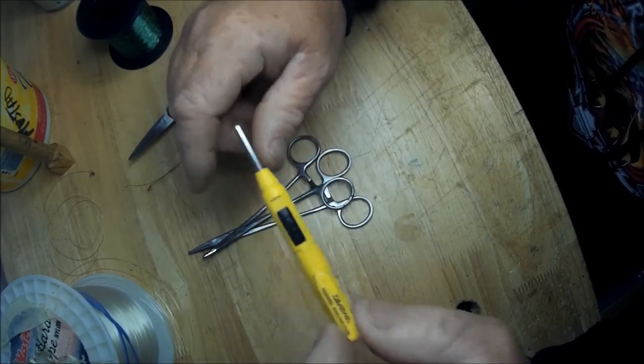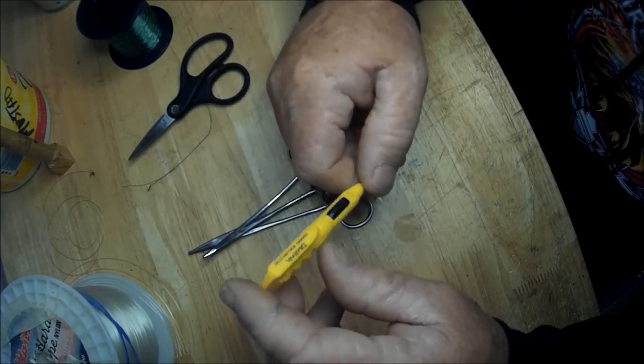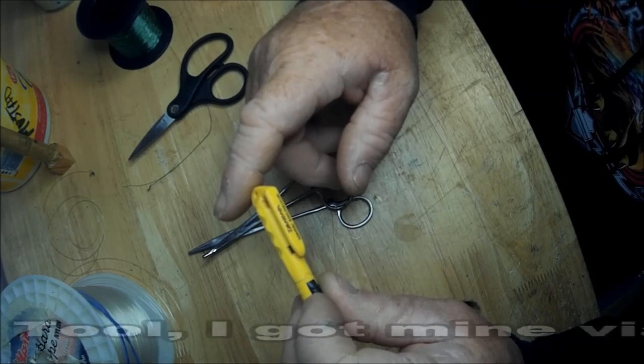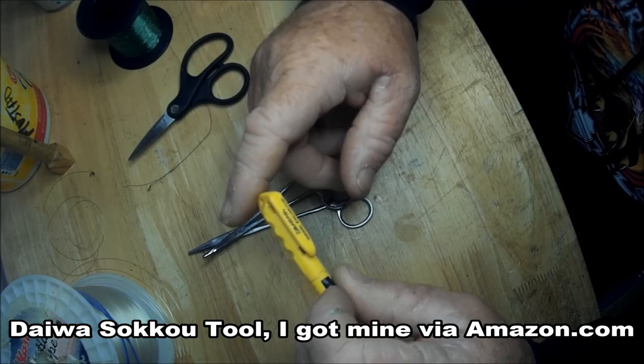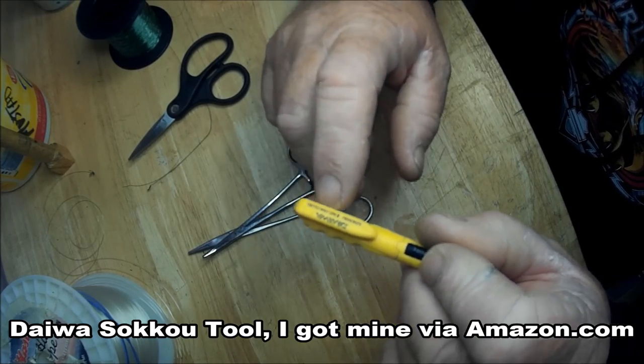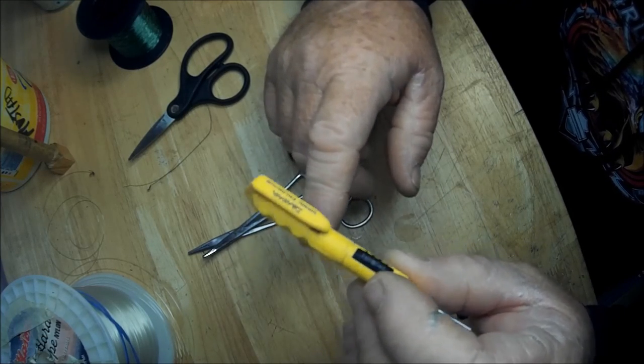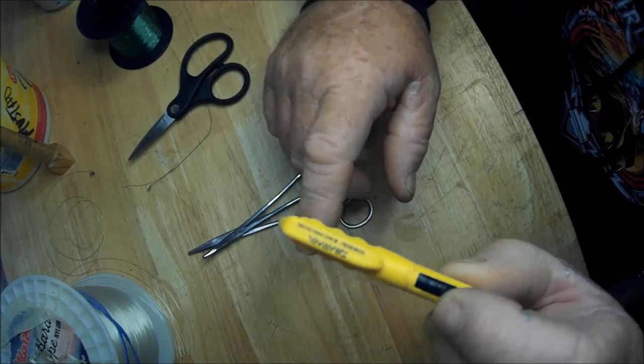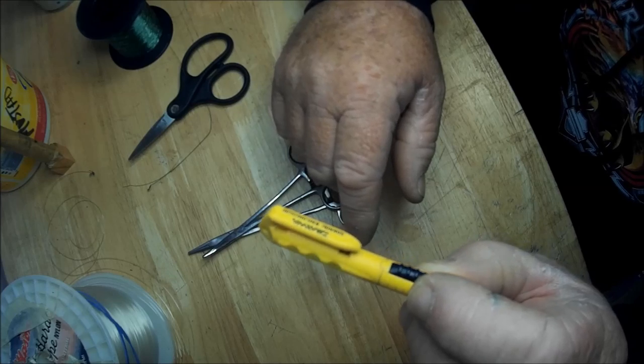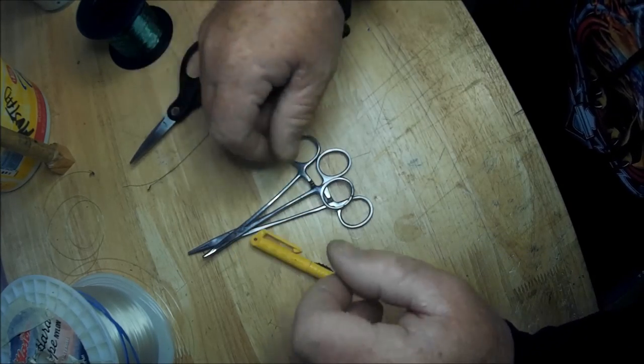This is the Daiwa Soku tool, S-O-K-K-O-U, and it can't be found in any tackle shops. It should be, I don't know why these things like this don't show up at American tackle shops, but they should. All righty, so thanks for watching.